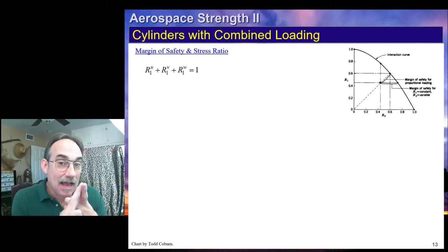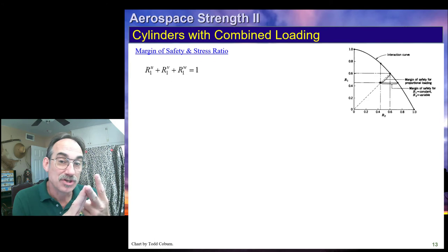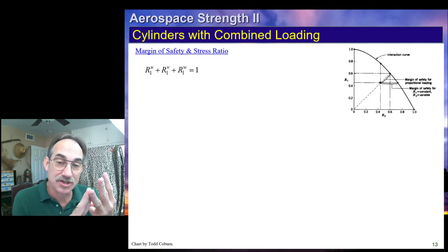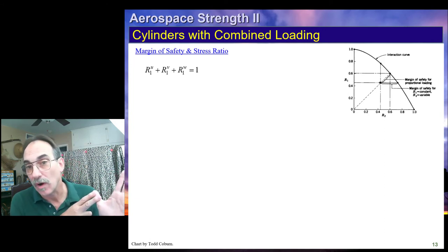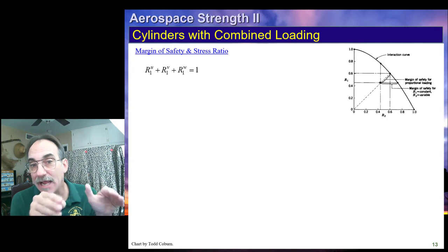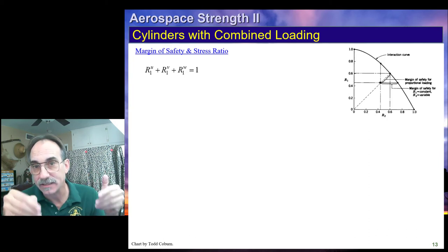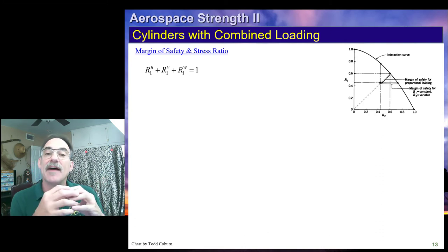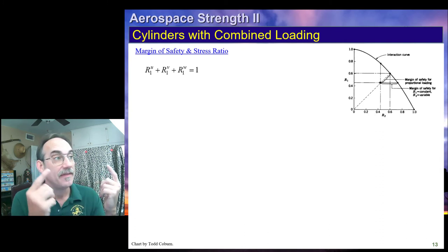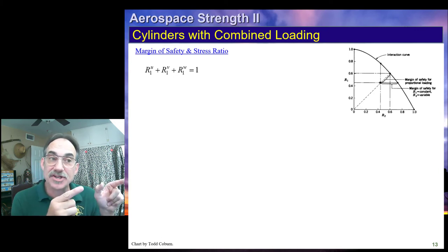We've now seen how to calculate the buckling allowable for compression, torsion, direct/transfer shear, bending, and external crush pressure — both hydrostatic and constant radial. If we have multiple loads simultaneously, we will use interaction equations.